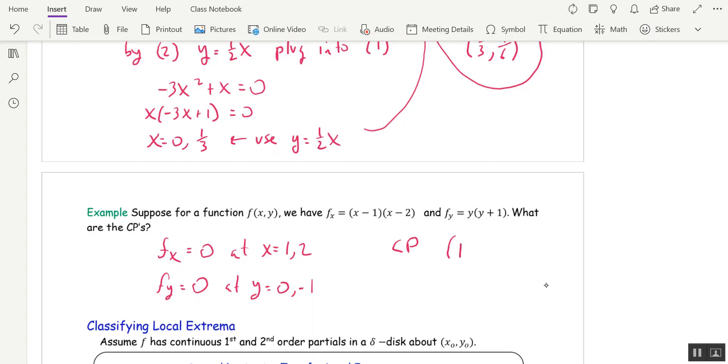So we're actually going to get four critical points here. If f sub x is 0, then x is 1 or 2. So suppose x is 1, then y could be either 0 or negative 1. So we get 1, 0 and 1, negative 1. And if x is 2, y could be 0 or negative 1. So we get 2, 0 and 2, negative 1. So those are our critical points.